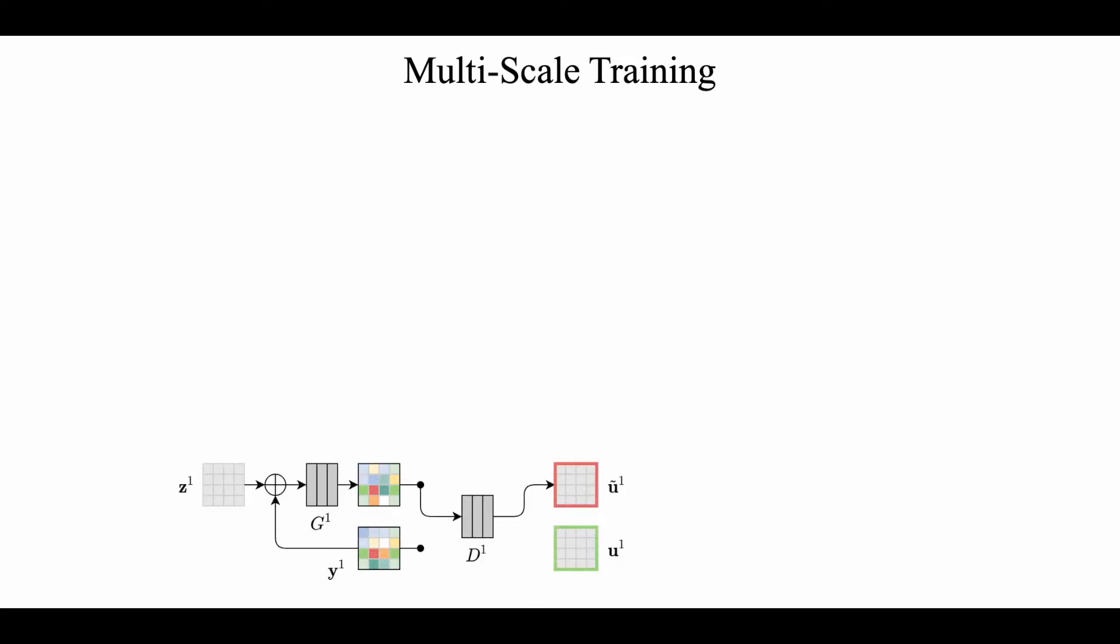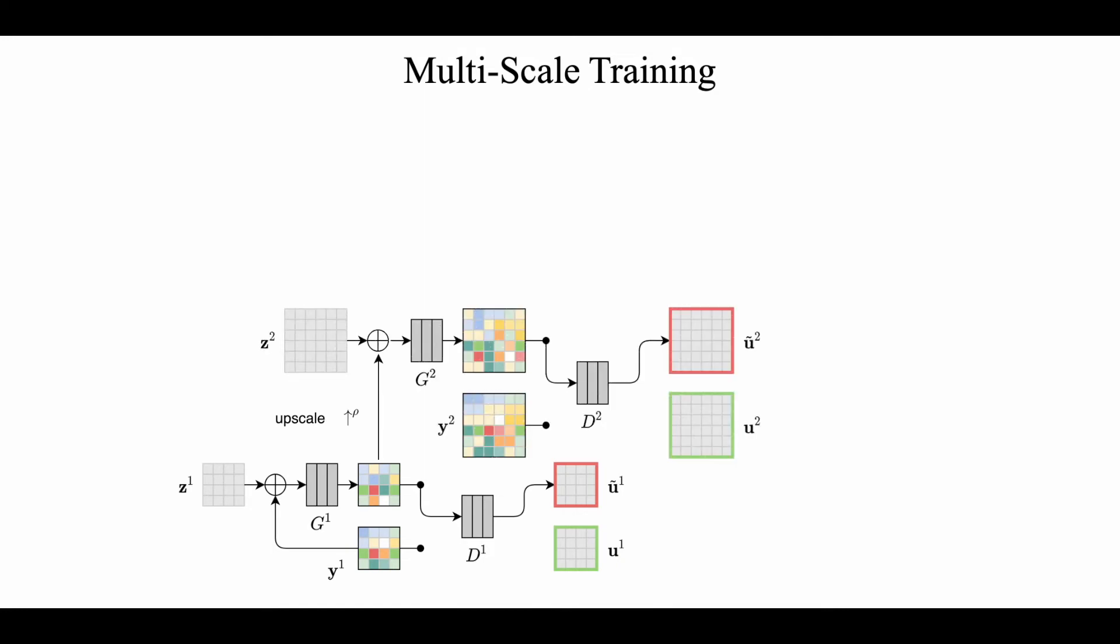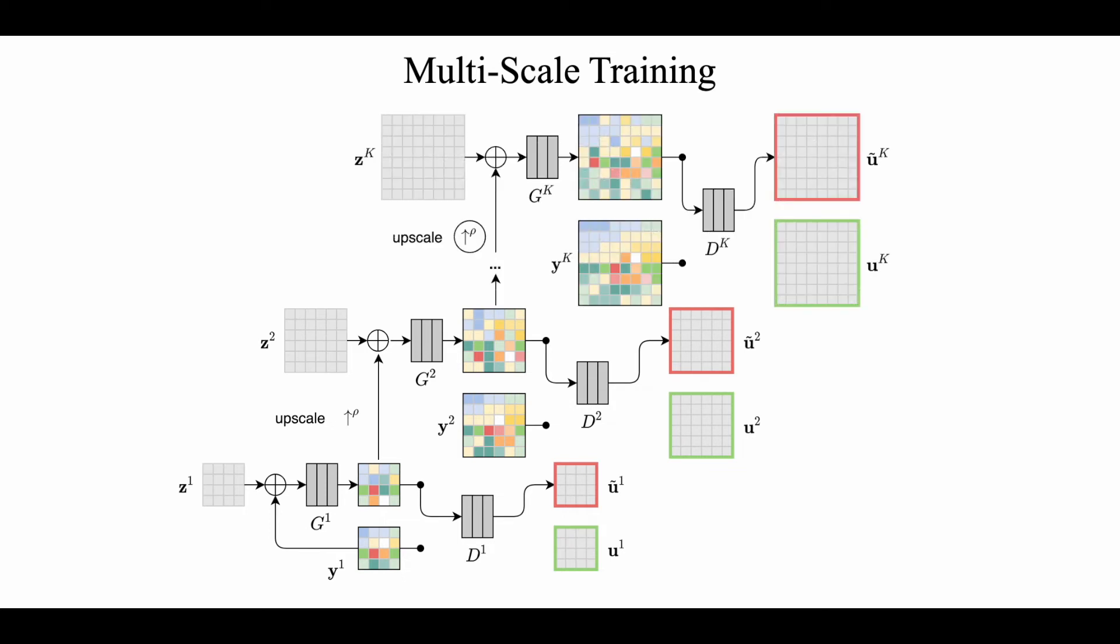First, we train the first scale as shown before. Then the predicted output is upsampled, added with the same distortions, and passed through second stage generator and discriminator networks. This is repeated for k stages, where task-specific distortions are added iteratively at each stage. This constitutes phase one of training.